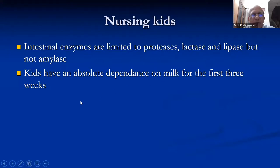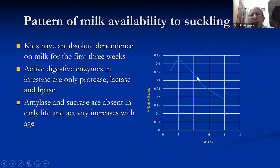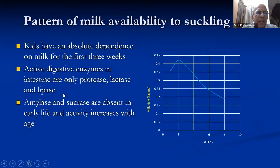Kids have an absolute dependence on milk for the first three weeks. The typical lactation curve in goats peaks at the second or third week and then declines — that's when kids are motivated to eat concentrates because the requirement is high but they don't get enough from suckling. Active digestive enzymes in the intestine are only protease, lactase, and lipase in the first two weeks. Amylase and sucrase are absent in early life, and their activity increases as age advances.